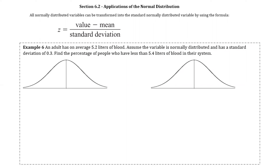The good news is that we can transform all normally distributed variables into a standard normally distributed variable, and the way that we do that is we use our z-score formula. In general, your z-score is found by doing the value minus the mean divided by the standard deviation. Written in symbols, it is z equals x minus mu all over sigma.